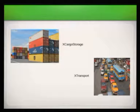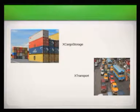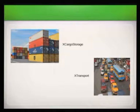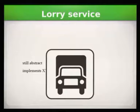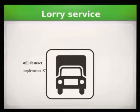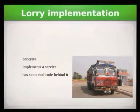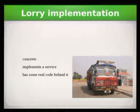To make that a bit more visual: you could have XCargoStorage, which means you can store something in it, and XTransport, which means you can transport something with it. Those would be two interfaces that define what a UNO object does. And then you could have a LORI service that implements both of these interfaces. And then you have the actual implementation, which is one specific LORI, with all its personality and bugs. That is the real implementation inside the LibreOffice core.